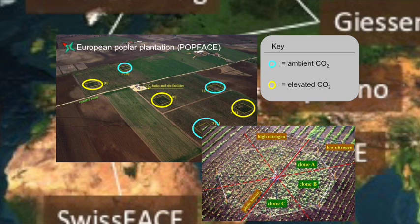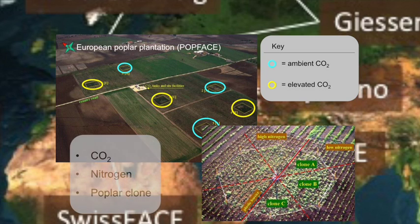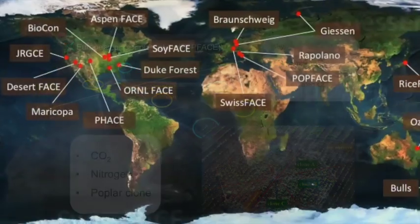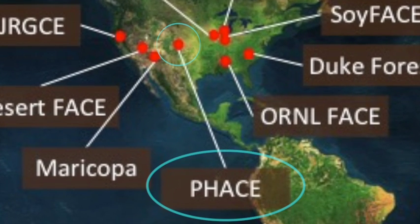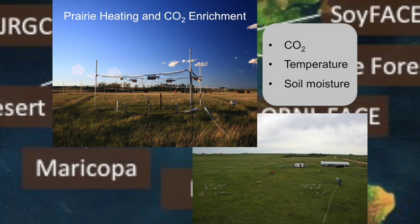Those halves were further divided into three subsections, each planted with a different species, or clone, of poplar. This experimental design allowed researchers to test the effects of elevated carbon dioxide and nitrogen additions on different species of poplar in a fully replicated factorial design. At the Prairie Heating and Carbon Dioxide Enrichment Experiment in Wyoming, experimenters manipulated atmospheric carbon dioxide, temperature, and soil moisture. Let's visit the Wyoming FACE site now to see how it was done.